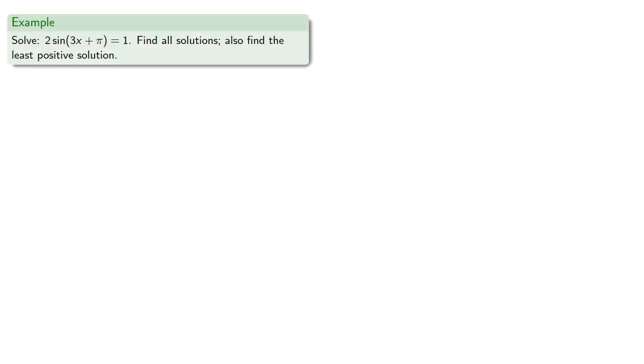For example, suppose we want to solve 2 sine of (3x plus pi) equals 1. Let's find all solutions, and then let's also find the least positive solution.